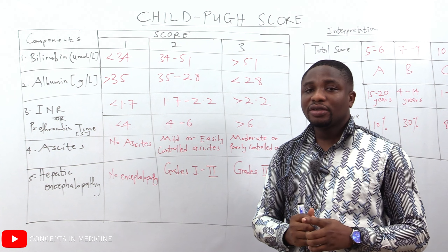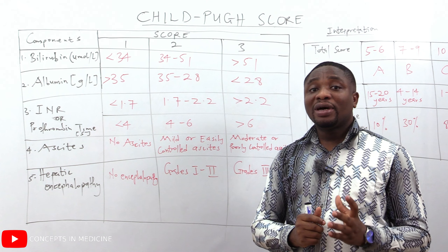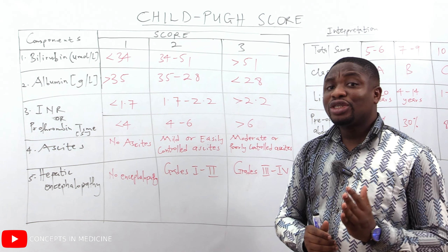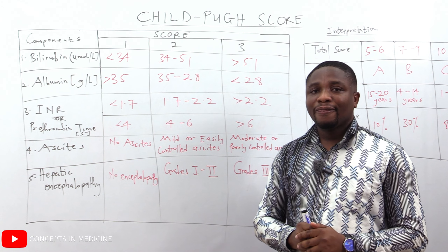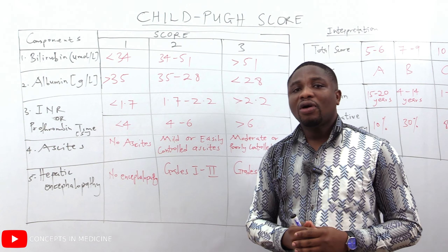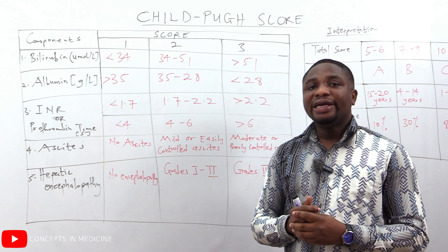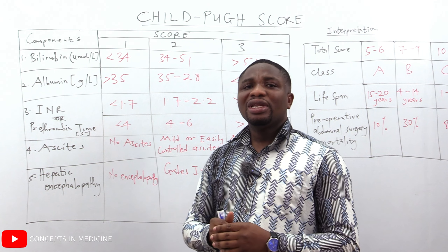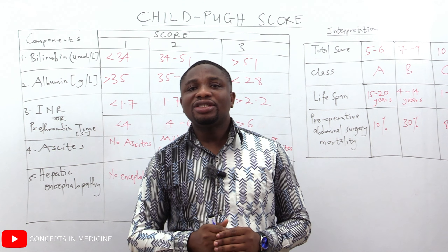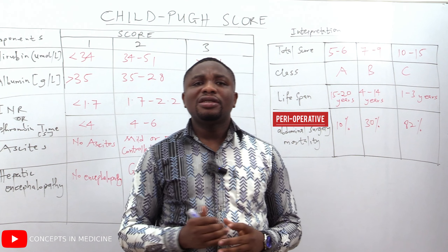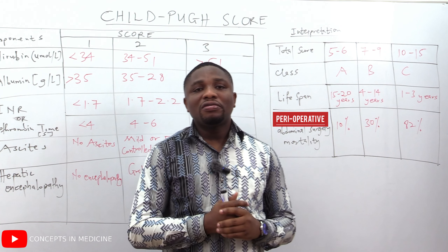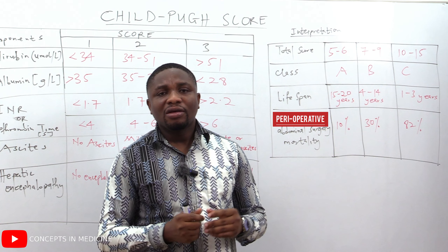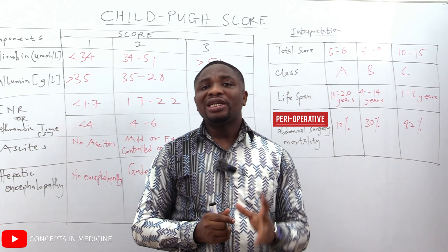The next component is INR. The lesser the INR, the better. An INR less than 1.7 gives a score of one; 1.7 to 2.2, a score of two; greater than 2.2, a score of three. In place of INR, we can use prothrombin time. Prothrombin time less than 4 seconds gives a score of one; 4 to 6 seconds, a score of two; greater than 6 seconds, a score of three.